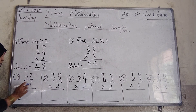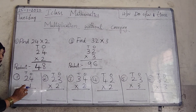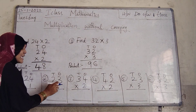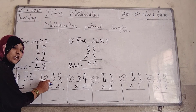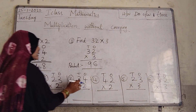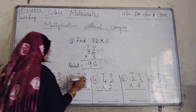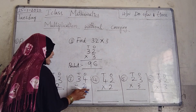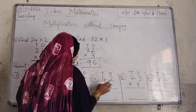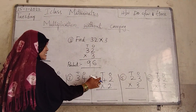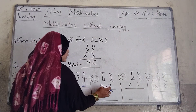First: 24 into 1. What number is in 1's place? 4. In 10's place? 2. For 24 into 1, you have to use the 1 times table. Second: 23 into 2. Which number is in 1's place? 3. In 10's place? 2. You have to multiply using the 2 times table. Third: 34 into 2. In 1's place? 4. In 10's place? 3. Use the 2 times table. Fourth: 42 into 2. In 1's place? 2. In 10's place? 4. Use the 2 times table.